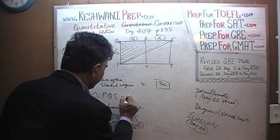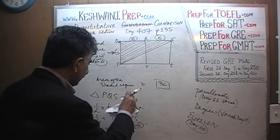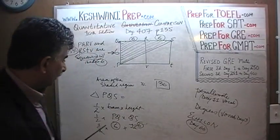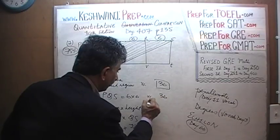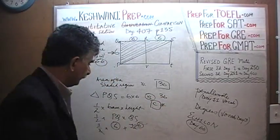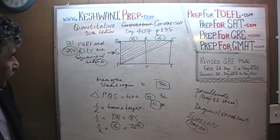We have the area of the triangle PQS as 6 times 6 versus 36. And of course, the answer is C. That was it, number 7.